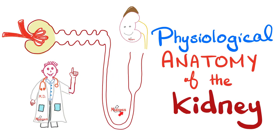Hey guys, it's Medicosis Perfectionatus, where medicine makes perfect sense. Let's continue our biology playlist. In the last video, we talked about the embryology and the anatomy of the kidney. Today, let's turn our attention to some physiology — how these 1 million nephrons per kidney actually work. So let's get started.